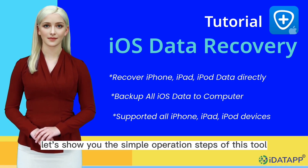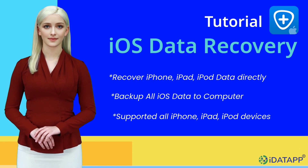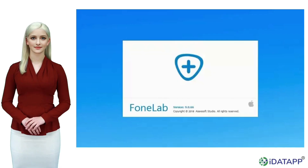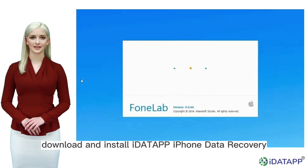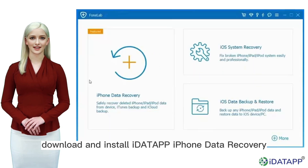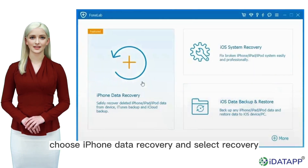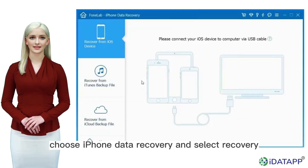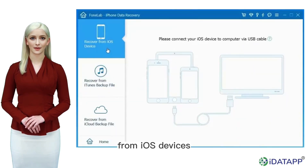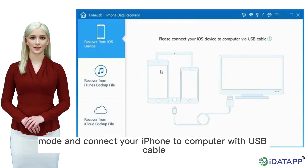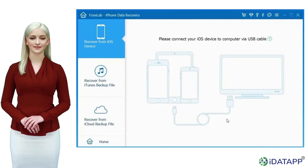Next, let's show you the simple operation steps of this tool. Step 1: Download and install iData by phone data recovery on your computer. Choose iPhone data recovery and select recovery from iOS devices. Choose the first mode and connect your iPhone to your computer with a USB cable.